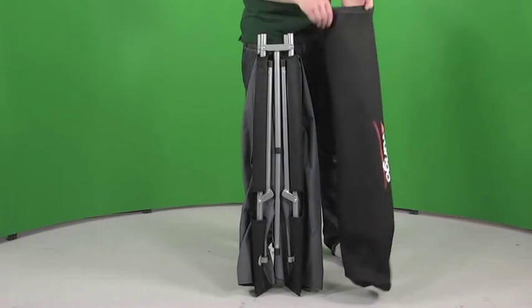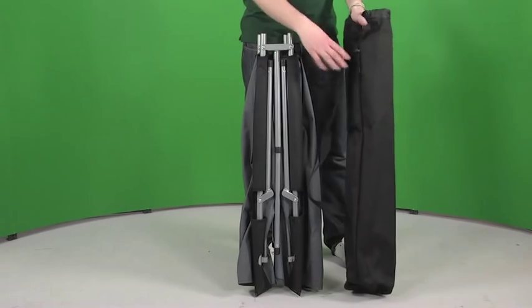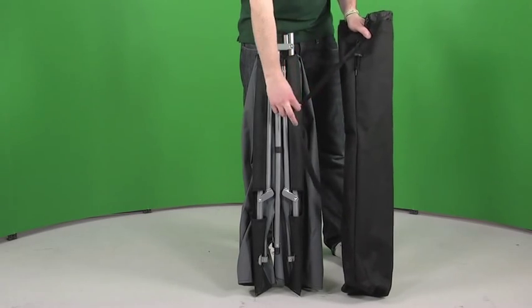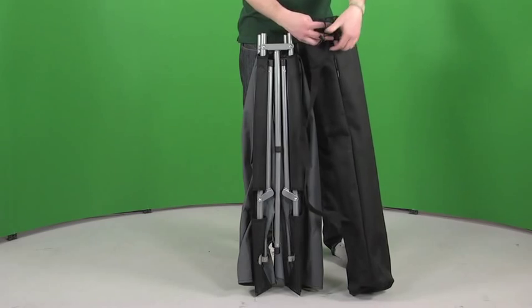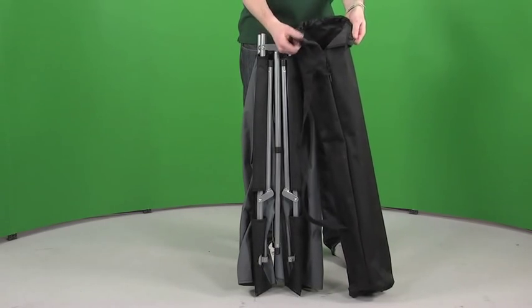So the camp bed itself comes in this carry bag. Really good quality carry bag. It comes with a shoulder strap for making it easy to move around and a drawstring top as well to get it in and out of the bag easily.